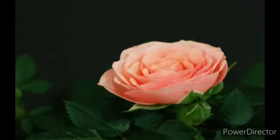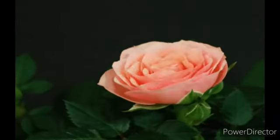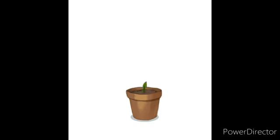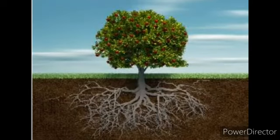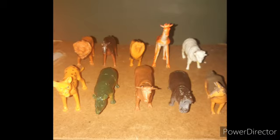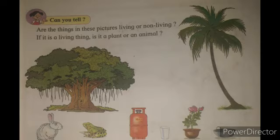Plants also move — for example, when a bird blooms into a flower, its petals open. But movements of plants are not easily seen. Plants also need food. Of course, plants do not move from place to place like animals do; their roots hold them down in one place. This is a big difference between plants and animals.